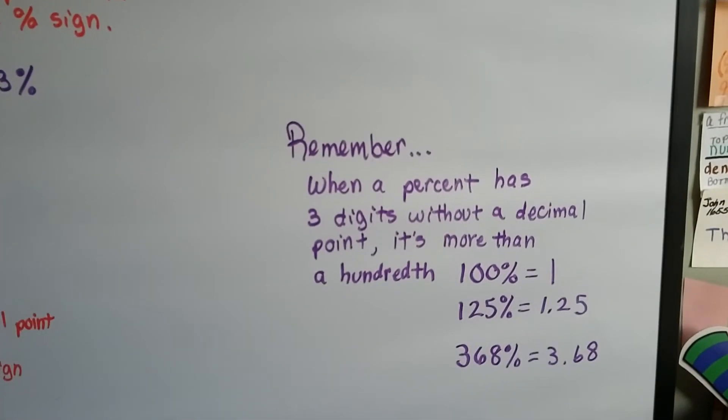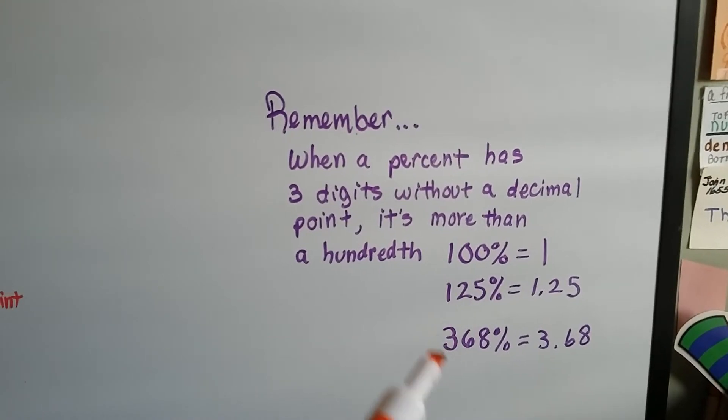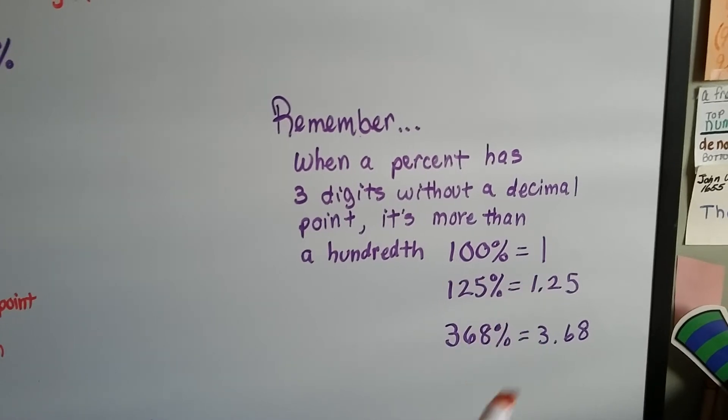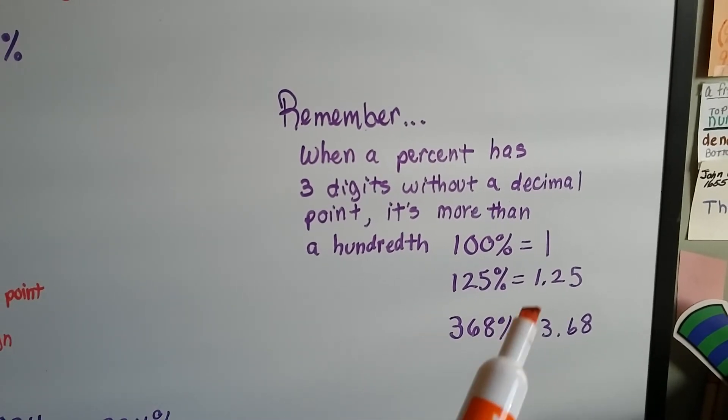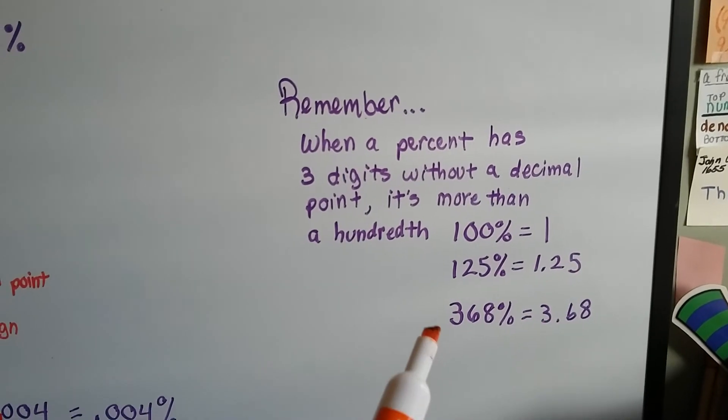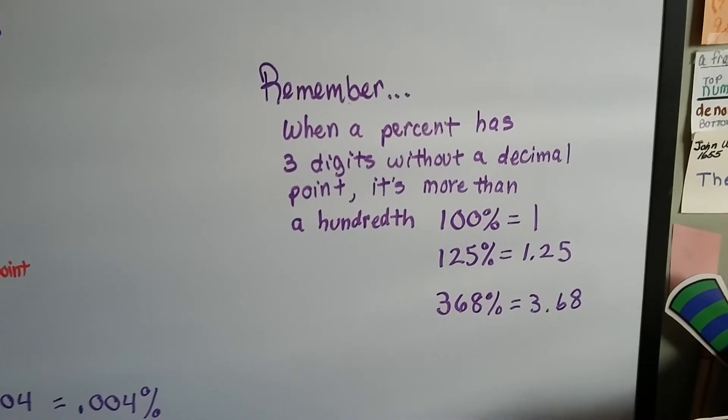And remember, when a percent has three digits without a decimal point in it, it's more than a hundredth. So 100% is 1. 125% would be 1.25. That's one and a fourth. And 368% would be 3 and 68 hundredths.